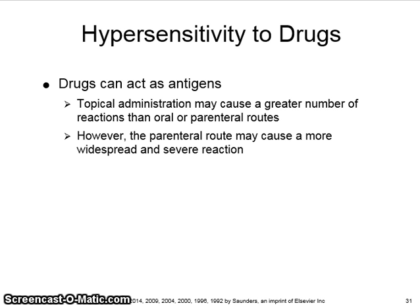Drugs can be involved in any of the previously described hypersensitivity reactions. Type 1 hypersensitivity to a drug can include anaphylaxis, hives, and angioedema. Type 3 hypersensitivity to a drug is known as serum sickness. Drugs can also be involved in Type 4 hypersensitivity reactions, which can cause contact dermatitis, skin inflammation, and contact mucositis.